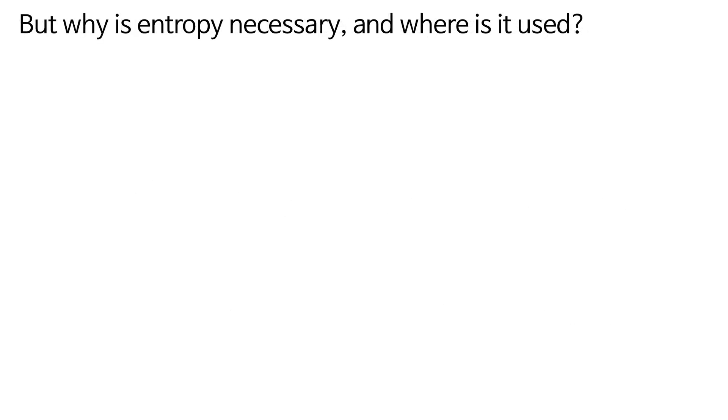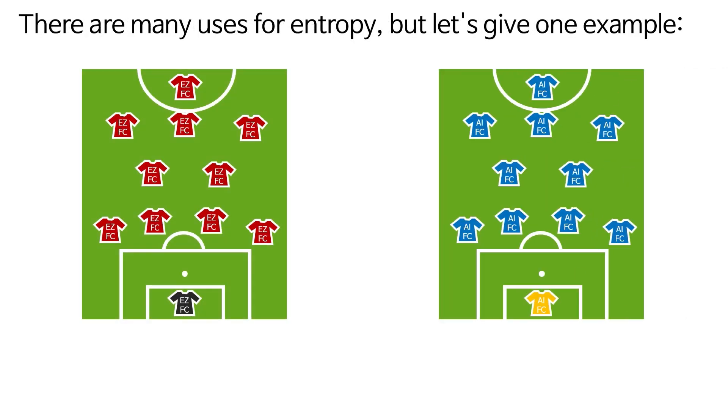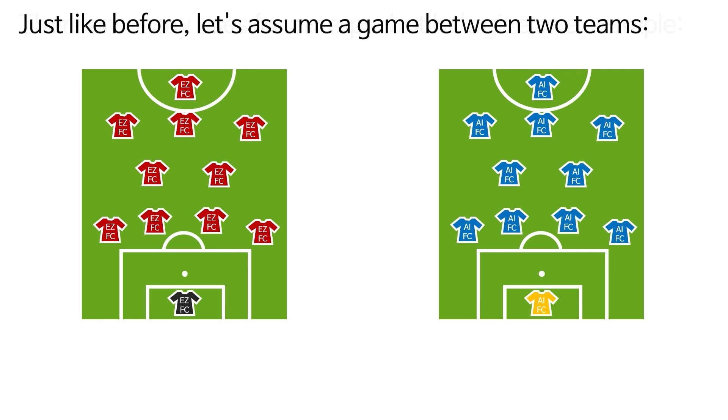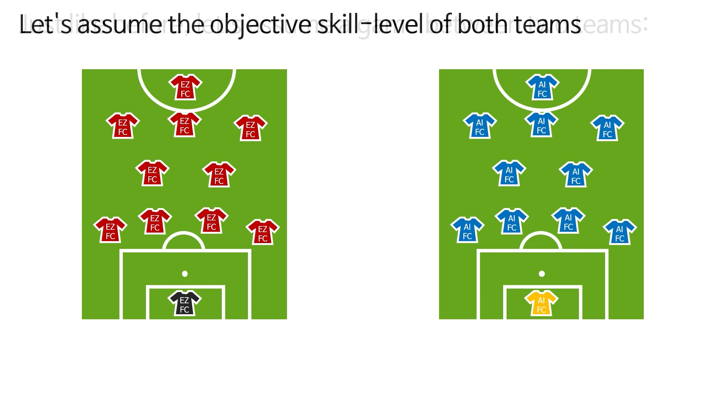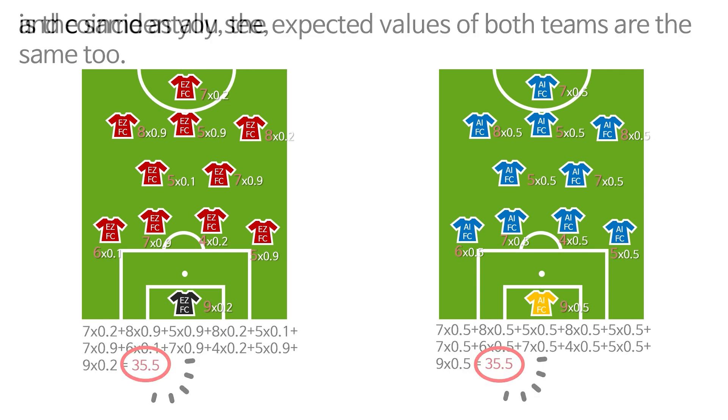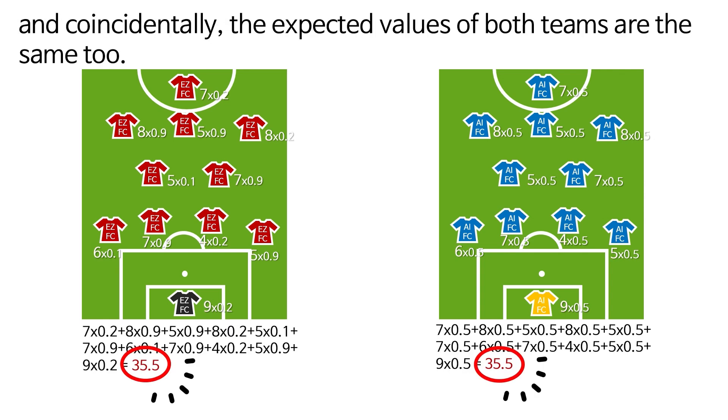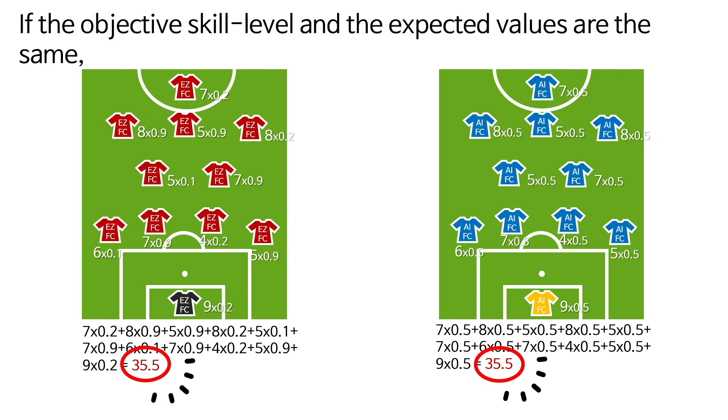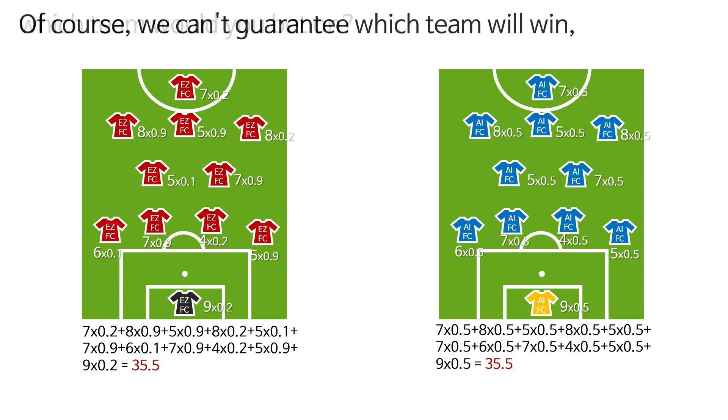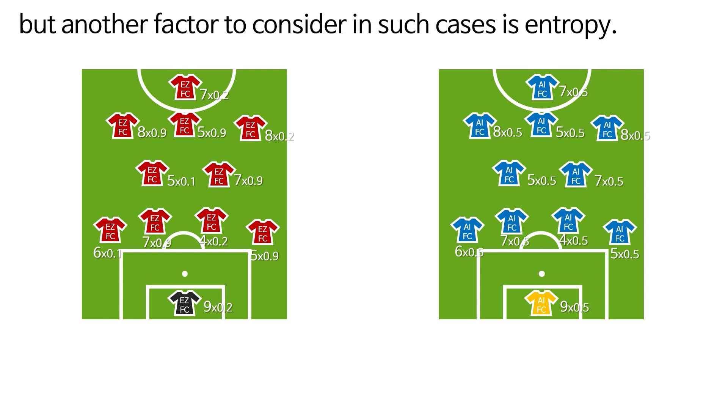But why is entropy necessary, and where is it used? There are many uses for entropy, but let's give one example. Just like before, let's assume a game between two teams. Let's assume the objective skill level of both teams is the same as you see, and coincidentally, the expected values or expected power of both teams are the same too. If the objective skill level and the expected values are the same, which team would you bet on? Of course we can't guarantee which team will win, but another factor to consider in such cases is entropy.